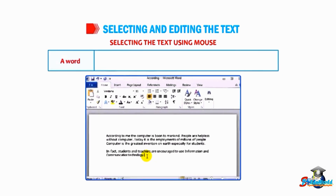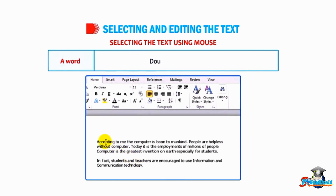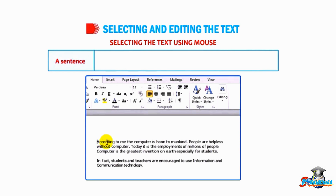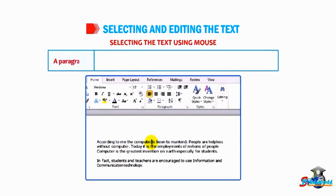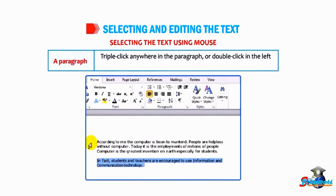To select a word, double click on the word. To select a sentence, hold down the Control key and click anywhere on the sentence. To select a paragraph, triple click anywhere in the paragraph, or double click in the left margin of the paragraph.